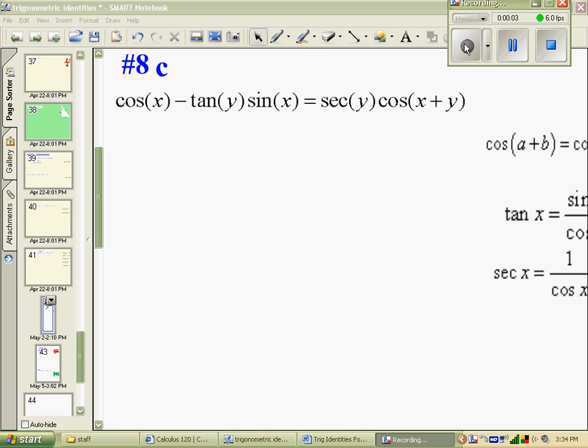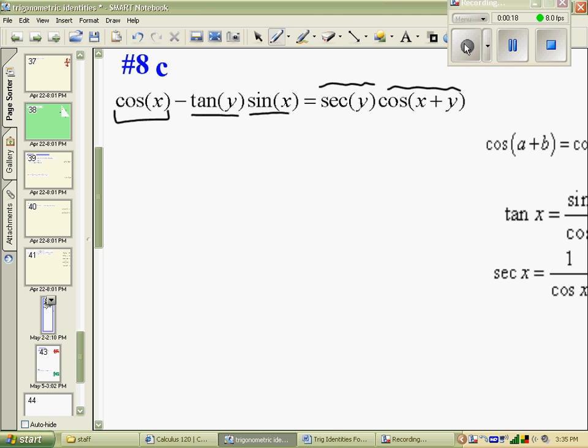Okay, here we're looking at number 8c, which is another proof, and in this case, we're trying to make the cosine of x minus tan y times sine x, and show that that's always equal to secant y times cos of x plus y.